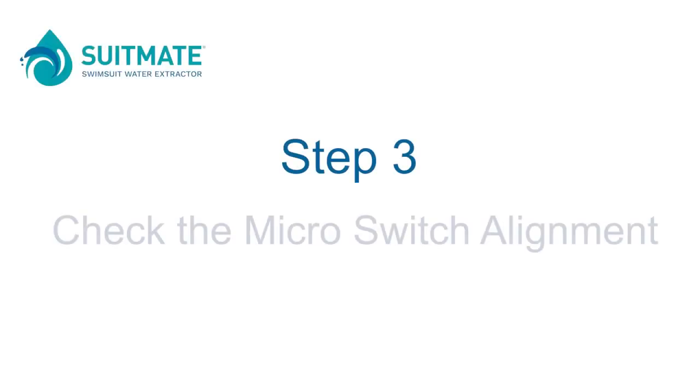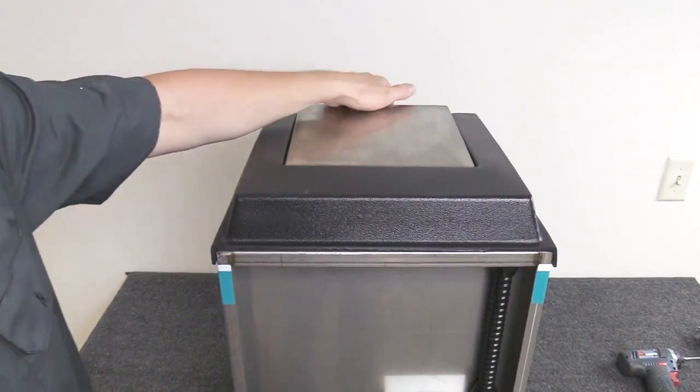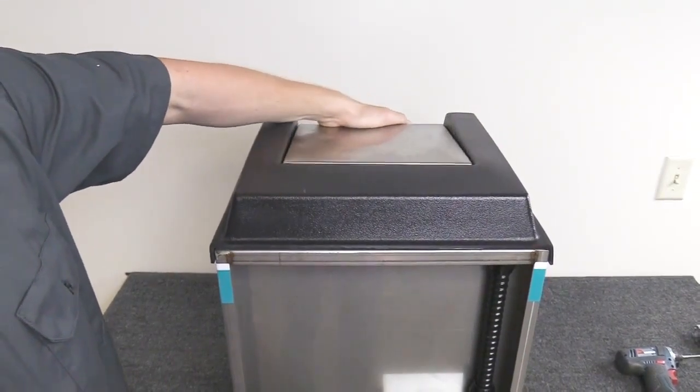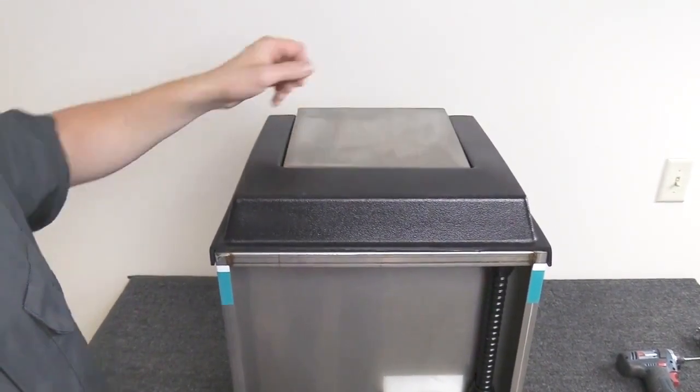Step 3. Check the microswitch alignment. Stand the unit upright and, reaching from the rear, push the lid down on the top of the unit.